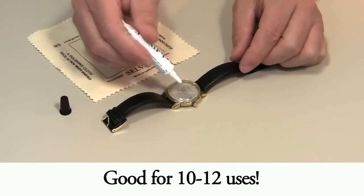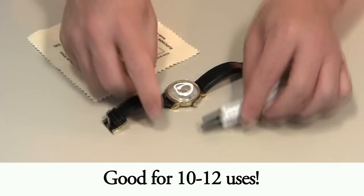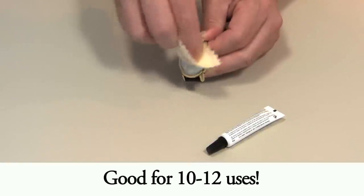One tube is good for 10 to 12 uses, making this a handy tool to have around for anyone who works on plastic watch crystals.